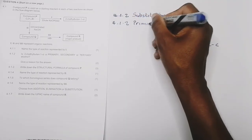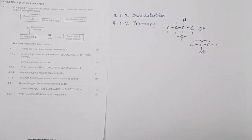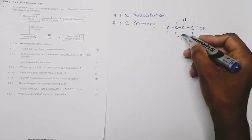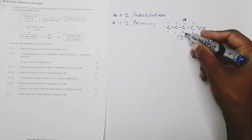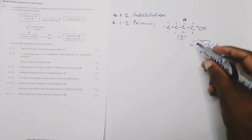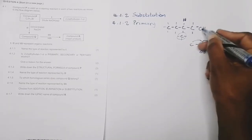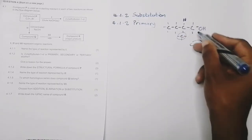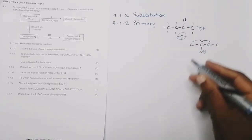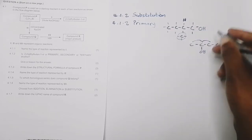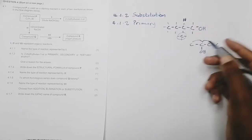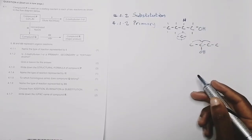The examiner put a trap here — when people see a side chain, they immediately think it's a secondary alcohol, but it is actually a primary alcohol. The reason is that the carbon bearing the functional group is linked to only one other carbon, or alternatively, it is at the end of the main parent chain.